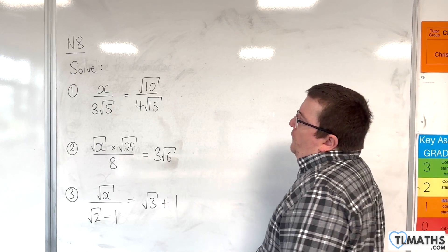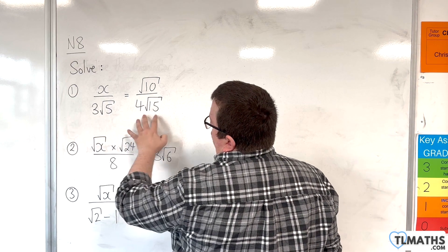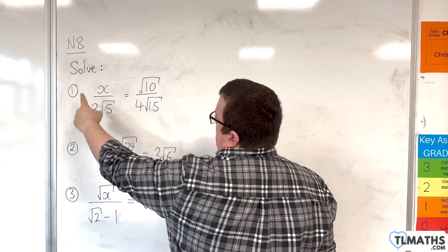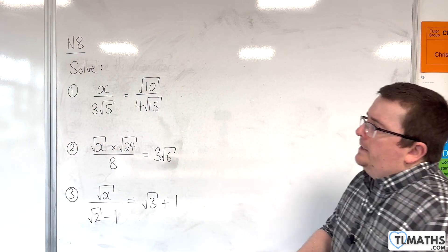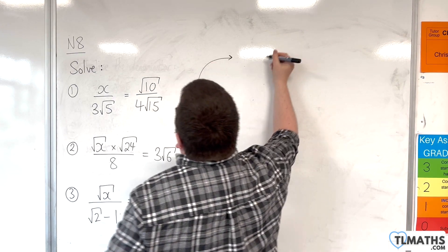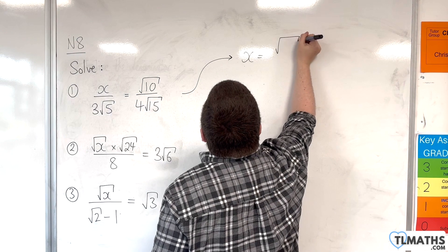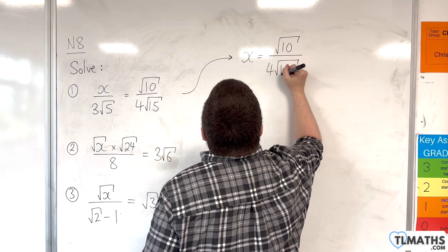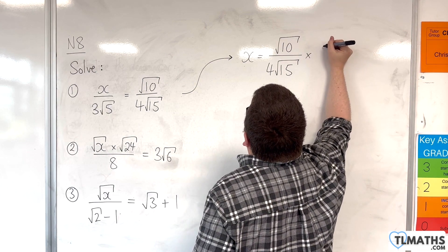With the first one, we've got x over 3√5 is equal to √10 over 4√15. I'm going to need to multiply both sides by 3√5 to isolate the x. So we're going to have x is equal to √10 over 4√15 times by 3√5.